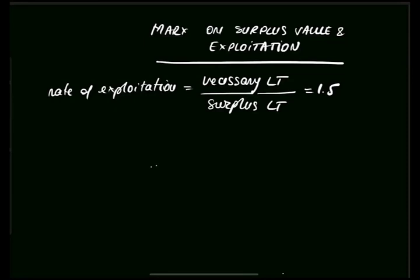One might ask: is the rest profit? Marx says the rest is not profit, so the rate of exploitation is not the same as the rate of profit. The capitalist has to use the surplus to do more than just collect profit — has to buy raw materials, do advertising, maintain a system of managers, research and development, and all of that has to be paid out of this rest value. Profit is a subset of the rest value, but it's not all of it.